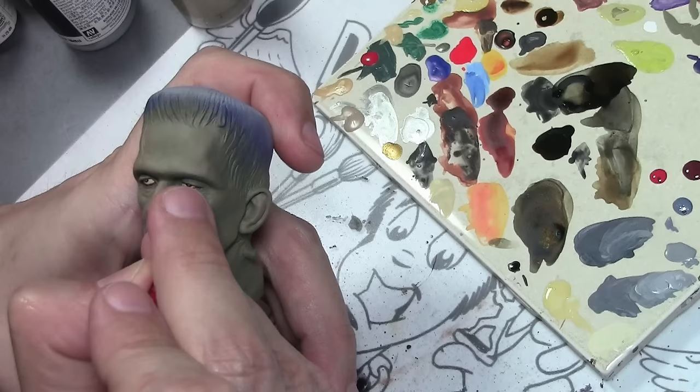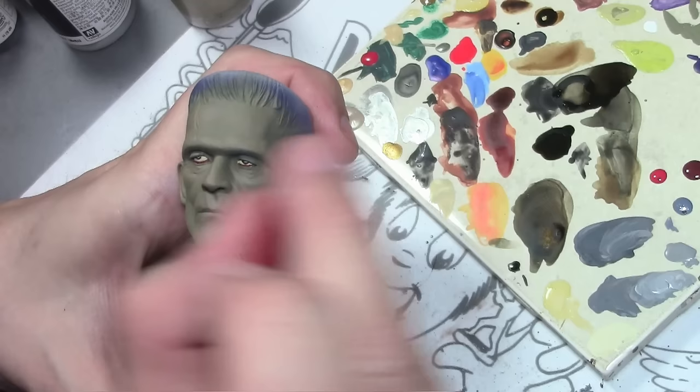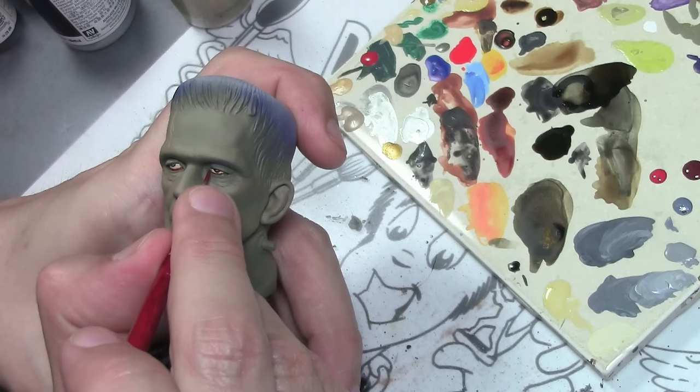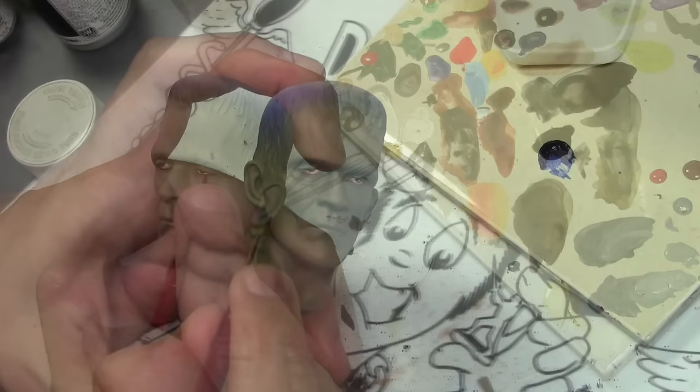The redness of the eye is going much heavier on that than we would a normal human being, using a mix of Model Color Burnt Cadmium Red mixed with Flat Red. The color is very thin, and we're applying it very heavily along the bottom of the eye and also in the corners.